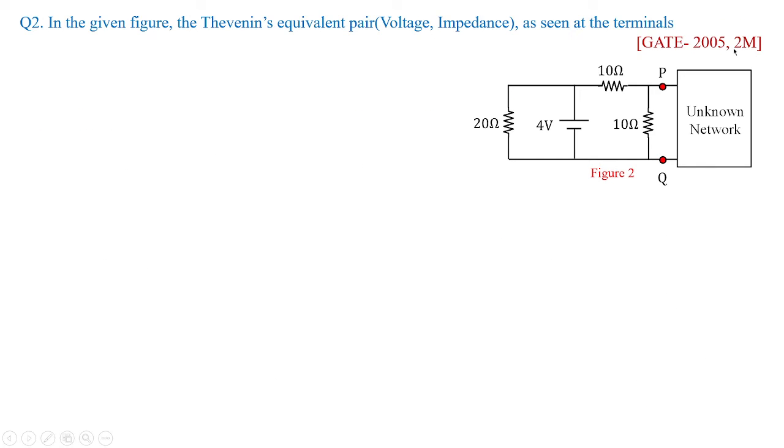In GATE 2005 for two marks, Thevenin's equivalent pair that is voltage and impedance were asked by looking at to the terminals P and Q. The options given were 2 volts 5 ohms, again 2 volts 7.5 ohms, 4 volts 5 ohms and 4 volts 7.5 ohms.